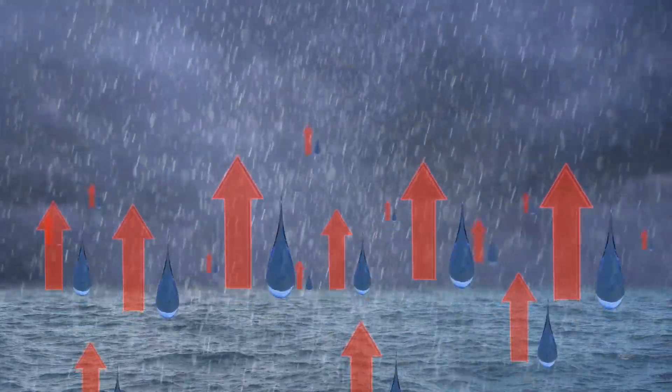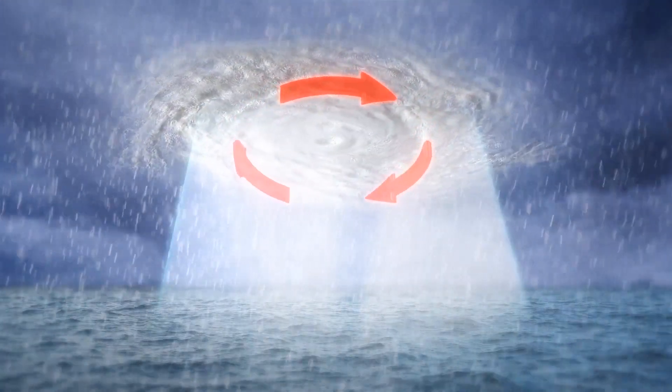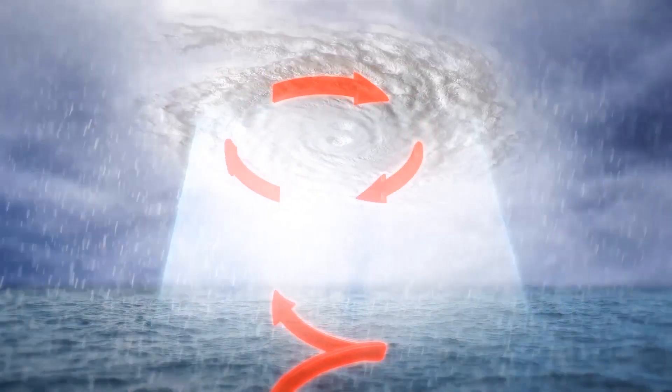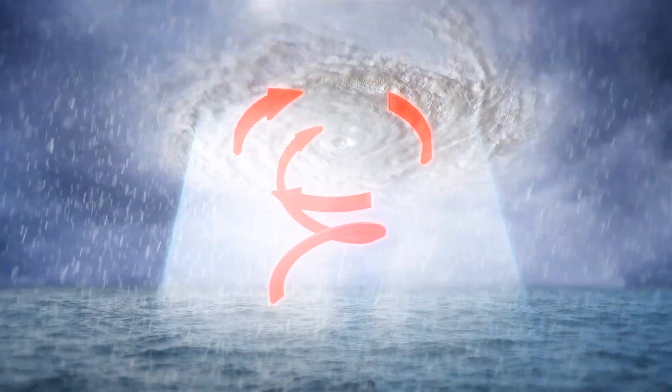Water vapor from the ocean continues to fuel the storm. The tropical cyclone's high winds create a massive mound of water along the front of the eye that causes storm surges as the hurricane moves over the ocean.